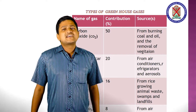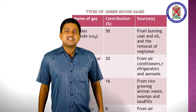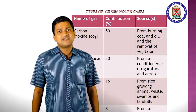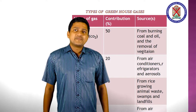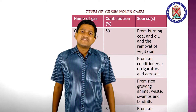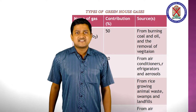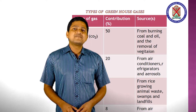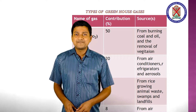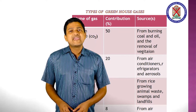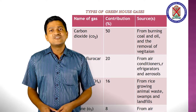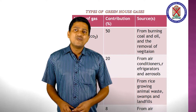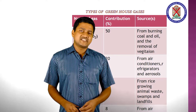There are different types of greenhouse gases occurring naturally and present in the atmosphere, along with their contributions and different sources. First, carbon dioxide has a contribution of about 50 percent. The main sources of carbon dioxide include burning of coal, oil, and the removal of vegetation.